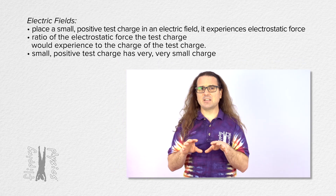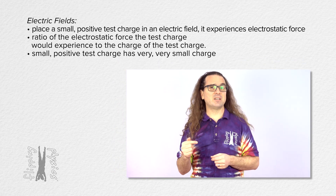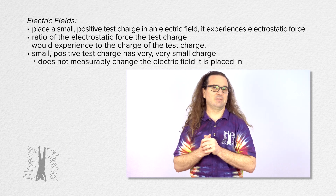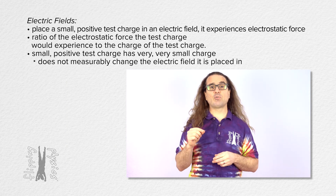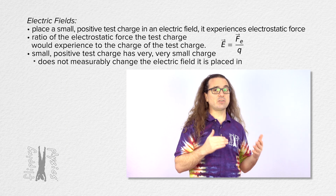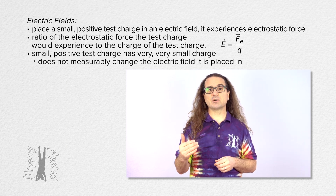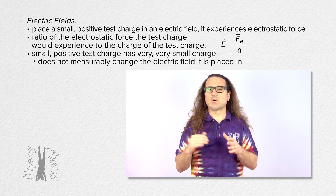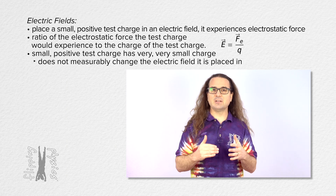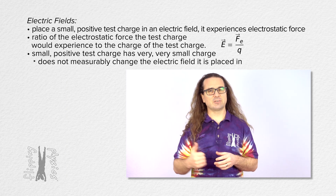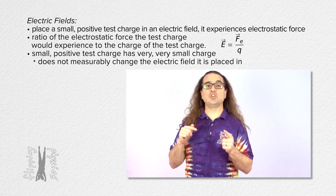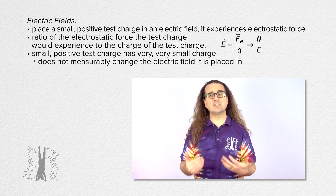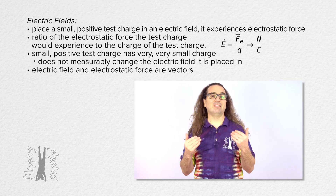A small positive test charge is a charge which is small enough not to measurably change the electric field it is placed in. The equation for an electric field is: electric field equals electrostatic force divided by the charge of the small positive test charge, where both electric field and electrostatic force are vectors. Notice this means the units on the electric field are newtons per coulomb, and please realize electric field is a vector.